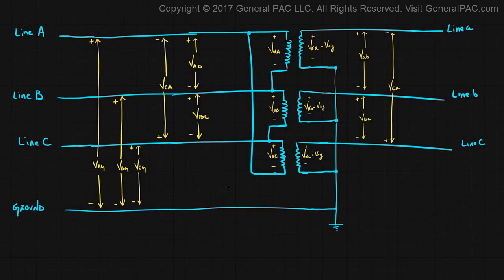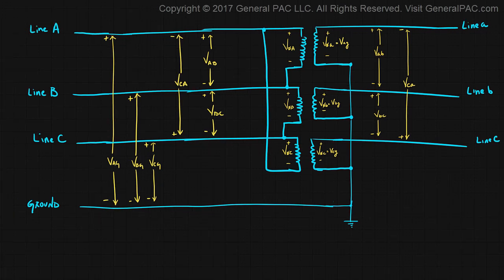In the previous videos, we drew this diagram and really understood all of the pieces and how they all work together. What we concluded was that VAG on the high voltage side is used as a reference quantity, and we're comparing that to VAG on the low voltage side, which is also used as a reference. These two pieces of information are critical, and what we ended up doing was drawing a phasor diagram.